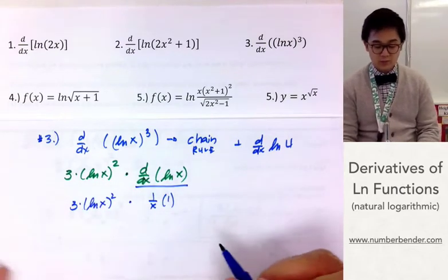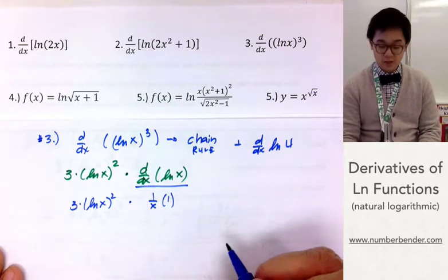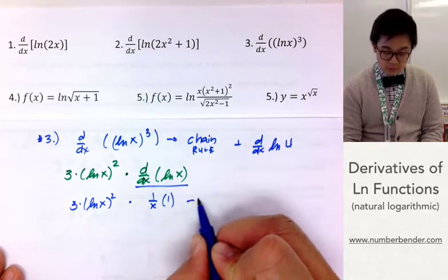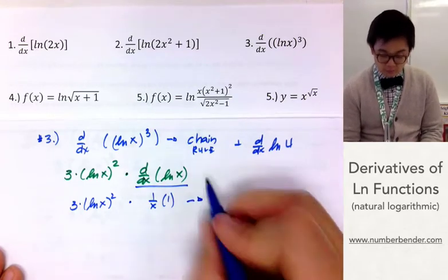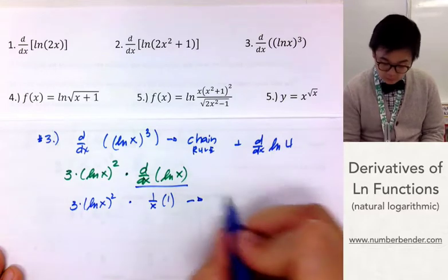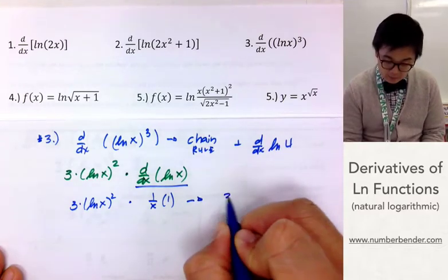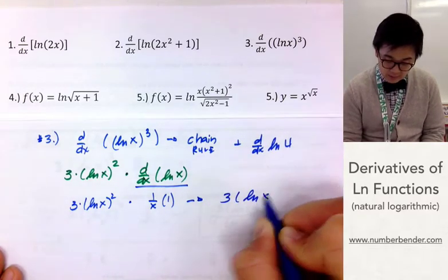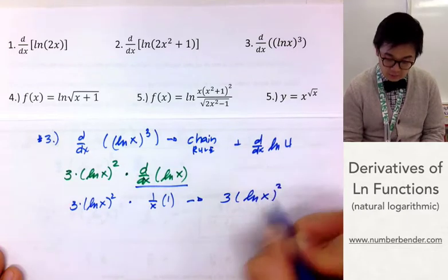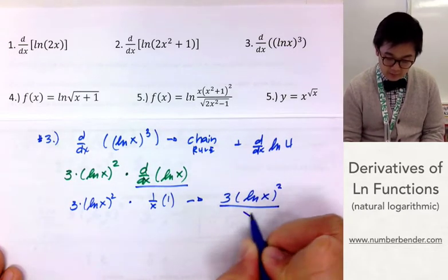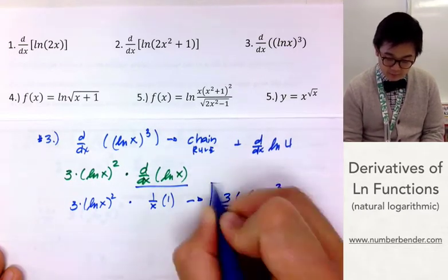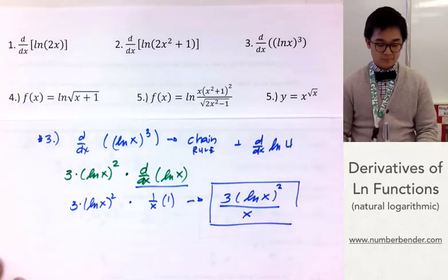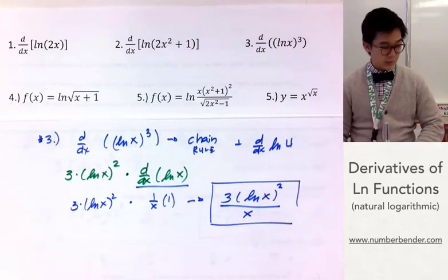We now have the derivative function for problem number 3. If we simplify it further, it will simply be 3 times (ln x)² divided by x. So that's problem number 3.